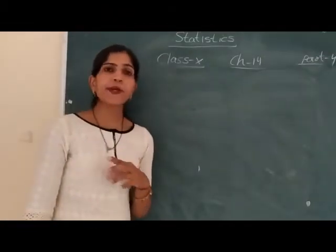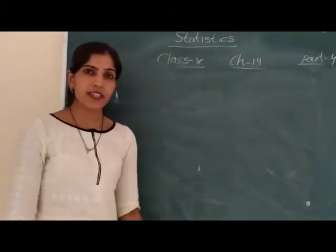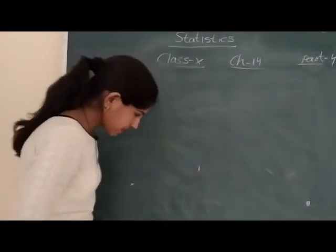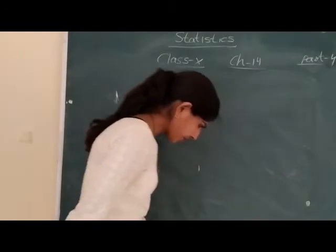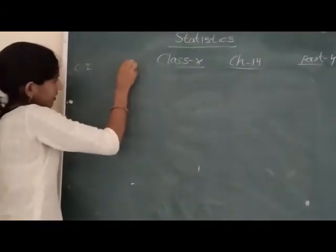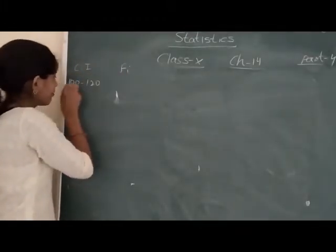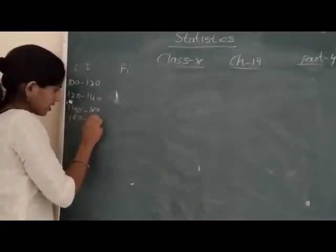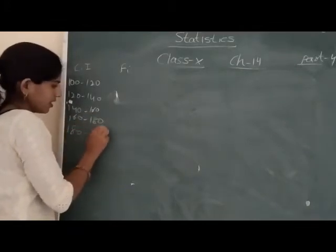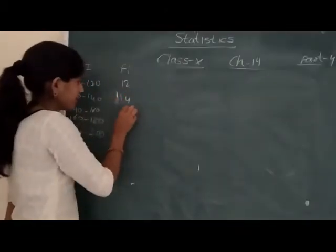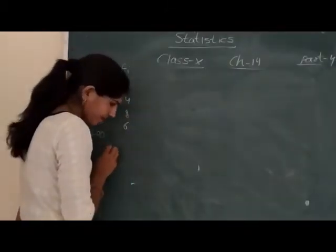Part 4 we will discuss about frequency distribution curve. For example, we have given 100 to 120, class interval given and FI given. 100 to 120, 120 to 140, 140 to 160, 160 to 180, and last 180 to 200. FI given as 12, 14, 8, 6, 10.